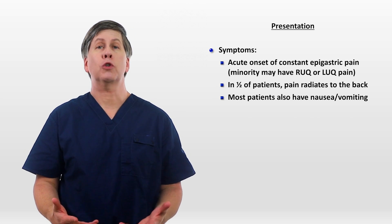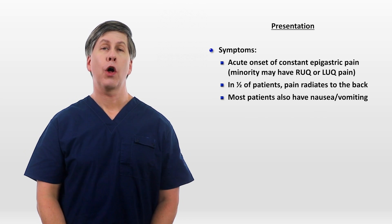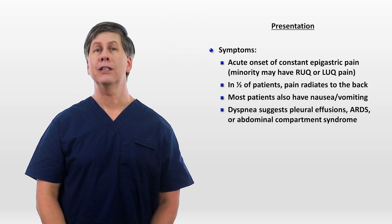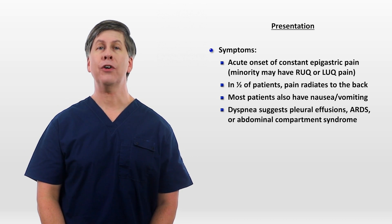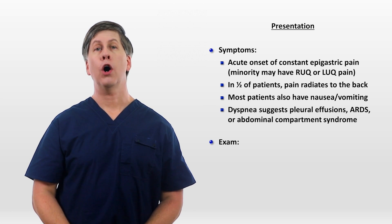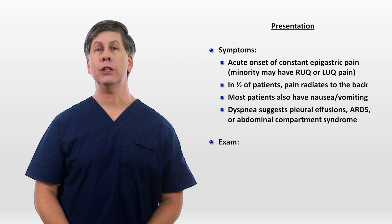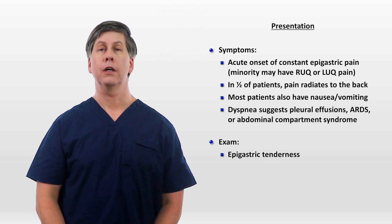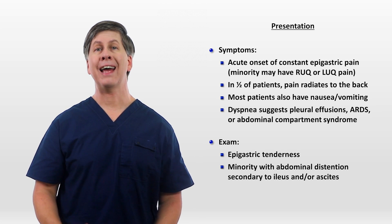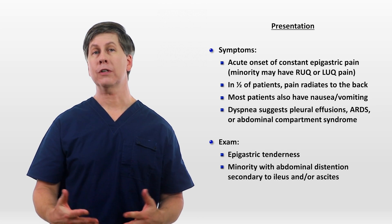That's the presentation in most people. The concurrent presence of dyspnea, which is rare at the time of presentation, suggests the development of pleural effusions, ARDS, or abdominal compartment syndrome. On exam, almost all patients have epigastric tenderness. A minority will also have abdominal distension, secondary to an ileus and/or the development of ascites.